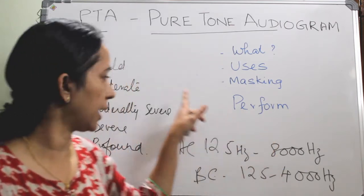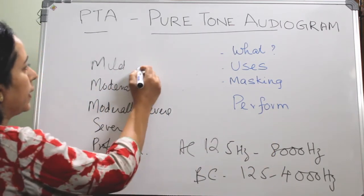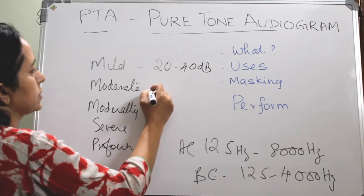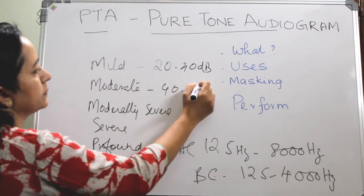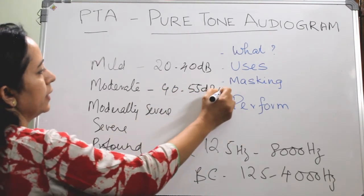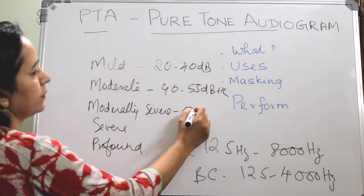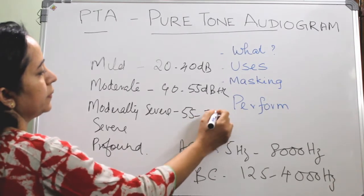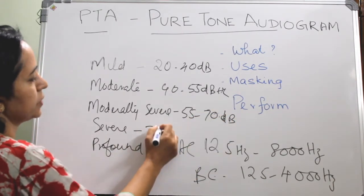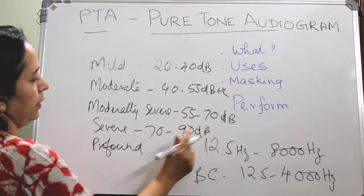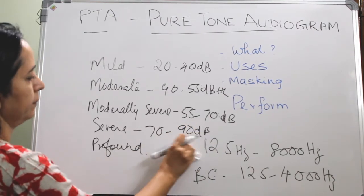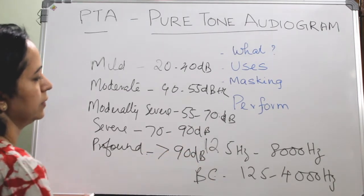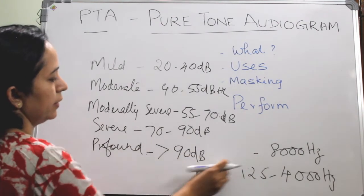From the pure tone audiogram, we classify hearing loss as follows: mild if 20 to 40 dB, moderate if 40 to 55 dB, moderately severe if 55 to 70 dB, severe if 70 to 90 dB, and profound if more than 90 dB.